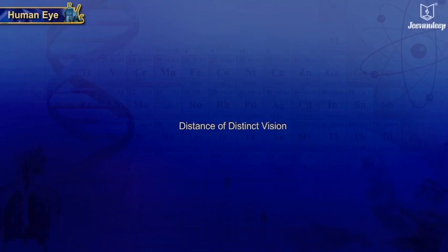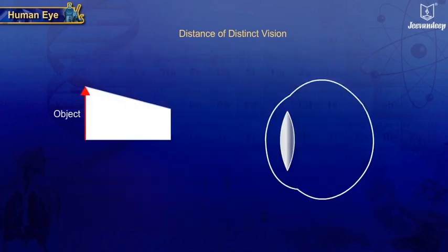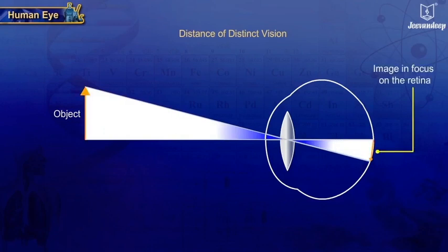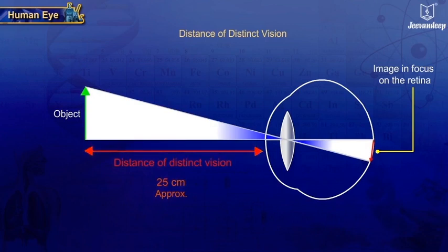Distance of distinct vision: We cannot read words in a book if it is held very close to our eyes. The minimum distance at which a normal eye can see an object clearly and distinctly without any strain is called the distance of distinct vision. It is about 25 cm for a normal human eye.